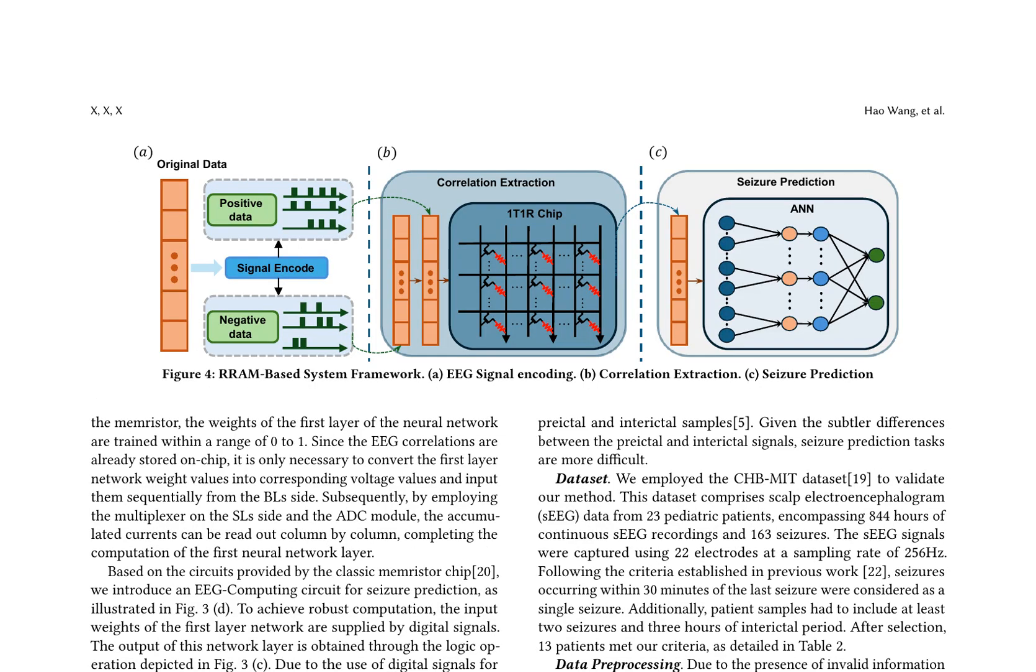The proposed RRAM-based system for seizure prediction utilizes an innovative approach to process EEG signals, leveraging memristor technology for efficient computation and energy savings. This framework consists of three main stages: signal encoding, correlation extraction, and seizure prediction. Signal encoding is the initial step in this process, where raw EEG data is converted into continuous pulse signals to preserve information. Two voltage thresholds, positive and negative, are set to generate pulses with specific amplitudes and widths when the EEG signal exceeds or falls below these thresholds. This results in two types of data, positive and negative, which are then fed into the memristor circuit in sequence.